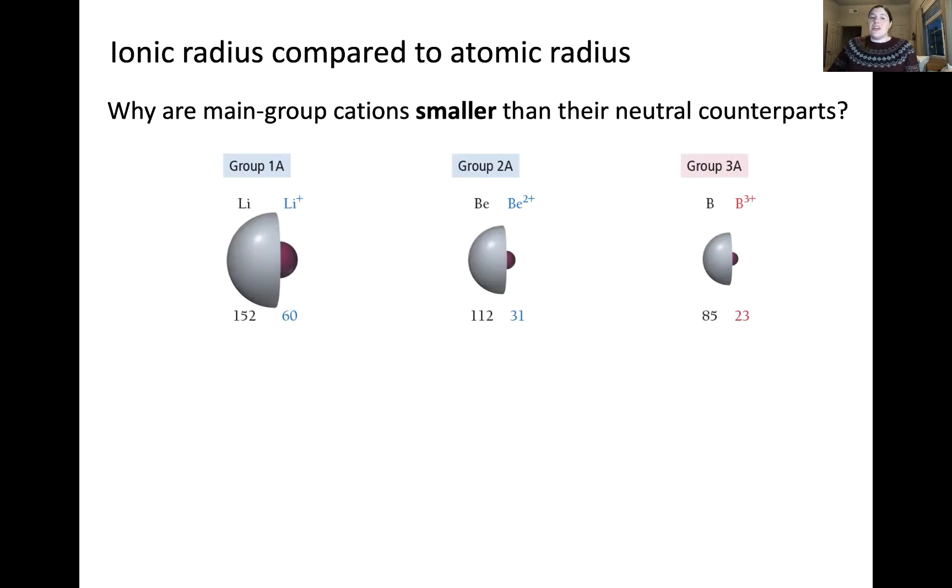Something we should touch on is how the ionic radius compares to that of the atomic radius. So one observation that's been made is that main group cations are smaller than their neutral counterpart. So here we're looking at lithium on the left and the lithium ion on the right. You'll notice that the cation is much smaller than the neutral atom counterpart. And this is observed for all main group cations.